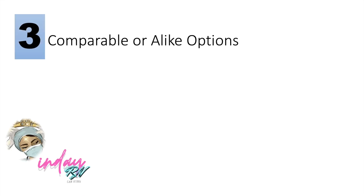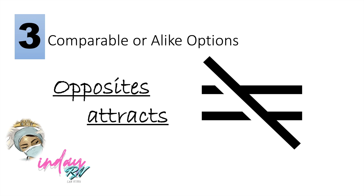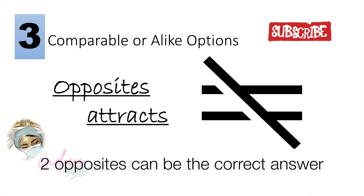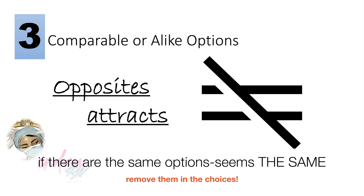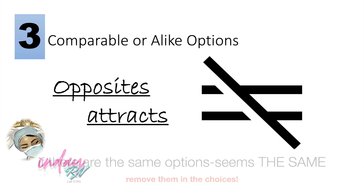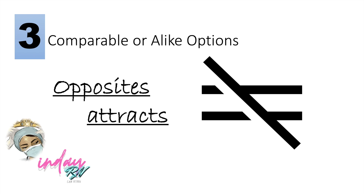The third strategy is comparable or alike options, also called 'same same or opposite attract.' When answering multiple choice questions, remember that opposites always attract — two opposite but related answer choices will yield one correct answer. If two answer choices are comparable or alike and one is wrong, the other is also wrong, so eliminate them both. Stay alert for keywords to determine what to keep or eliminate.